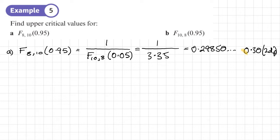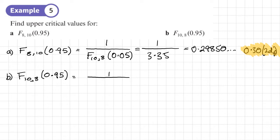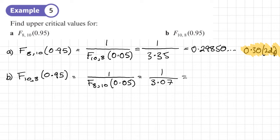One divided by 3.35 gives 0.30 to two decimal places. Moving on to part b: find the lower critical value for an F distribution with ten and eight degrees of freedom — the opposite way around to the previous one. That's one over the F distribution with eight and ten degrees of freedom at 0.05. From the table that's 3.07, so one divided by 3.07 gives 0.3257..., which rounds to 0.33 to two decimal places.